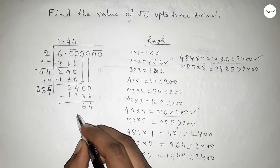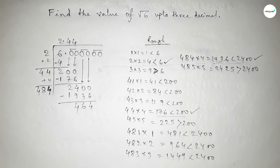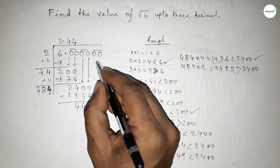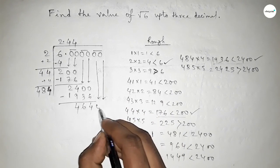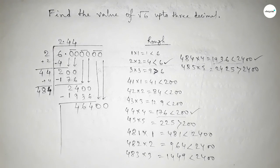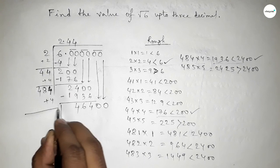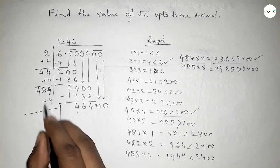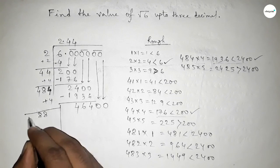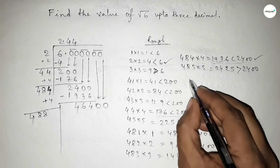So here we put 4, and this is 1936. Now subtracting — this gives 464. Similarly putting the pair of zeros here and adding the last digit 4, so this becomes 488.